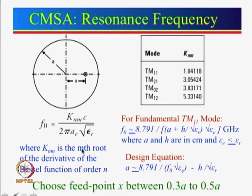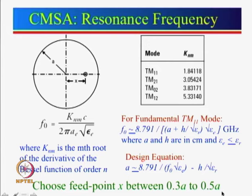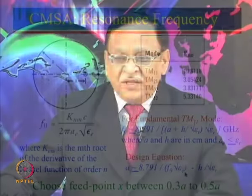The next important thing is where to choose the feed point. As a starting point: x can range from 0.3a to about 0.5a. For narrow-band circular microstrip antennas (CMSA) start with 0.3a, and for broadband CMSA start with a value closer to 0.5a. The bandwidth curve from the last lecture — showing percentage bandwidth for different values of dielectric constant and substrate thickness — determines the feed point location.